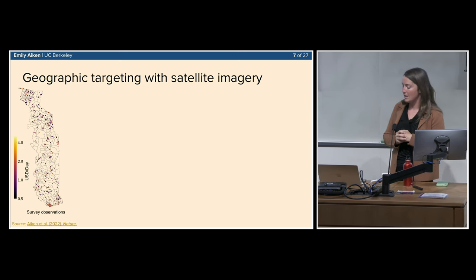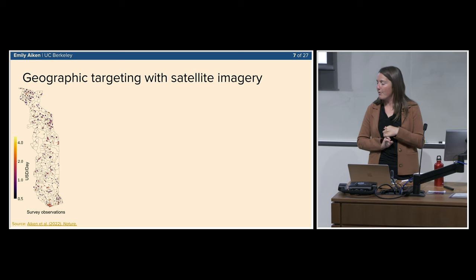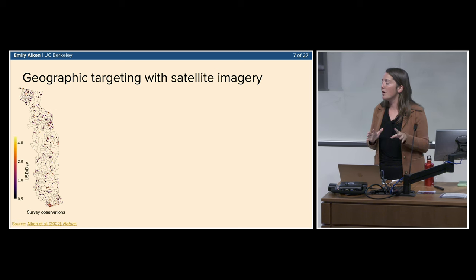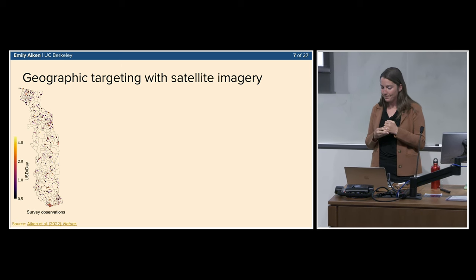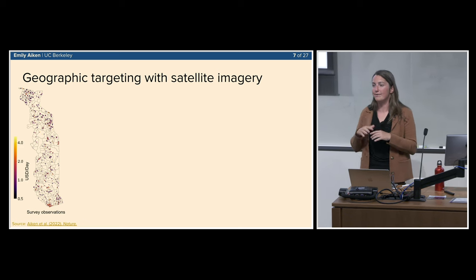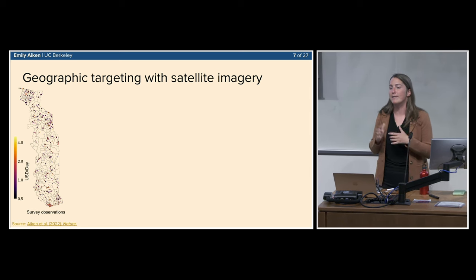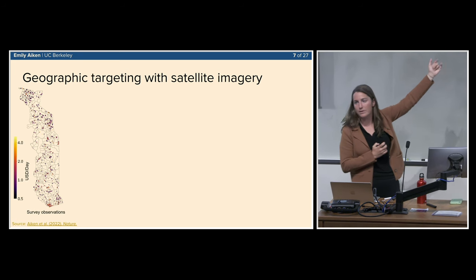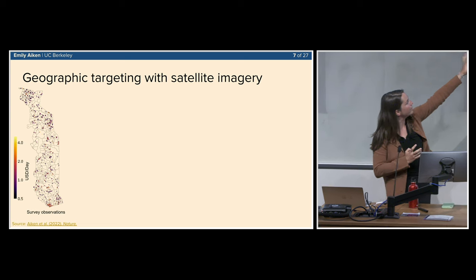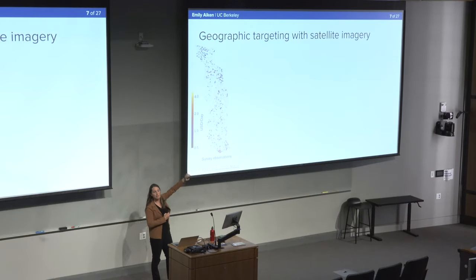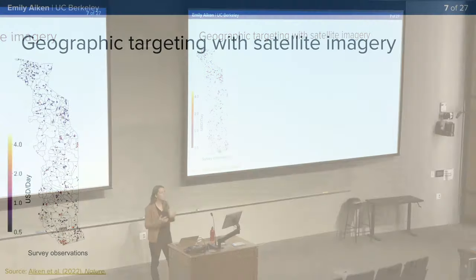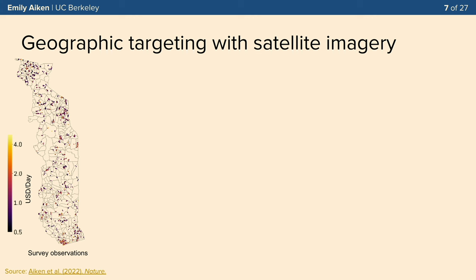We designed a two-stage targeting approach, both stages based on digital data and machine learning. In the first stage, we aimed to select eligible areas — specifically the poorest 100 cantons of Togo. The challenge was that Togo had no up-to-date census and no survey representative at the canton level. Many cantons had no observations at all in the most up-to-date socioeconomic survey, so we couldn't use it to generate a traditional poverty map.